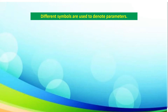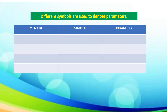To deepen our understanding about parameters and statistics, let us have the different symbols used to denote parameters. In our table, we have different columns: measure, statistic, and parameter. Under measure, we have mean. For statistic, it is x-bar, and for parameter, it is mu.